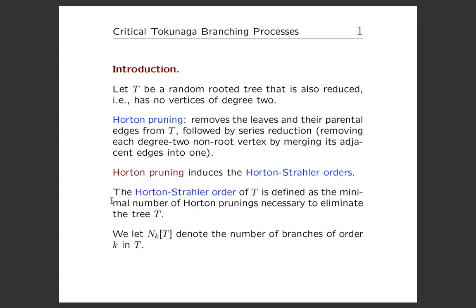Let T be a random rooted tree that is also reduced, meaning it has no vertices of degree two. Horton pruning removes the leaves and their parental edges from the tree, followed by series reduction. Series reduction removes each degree-two non-root vertex by merging its adjacent edges into one.